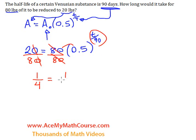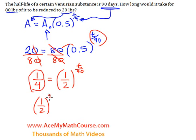I'm going to rewrite the 0.5 as half to the power of t over 90. And look at this. I have 1 over 4 here. I can rewrite the 1 over 4 as half to the power of 2 or just half squared. Hopefully that makes good sense to everyone.